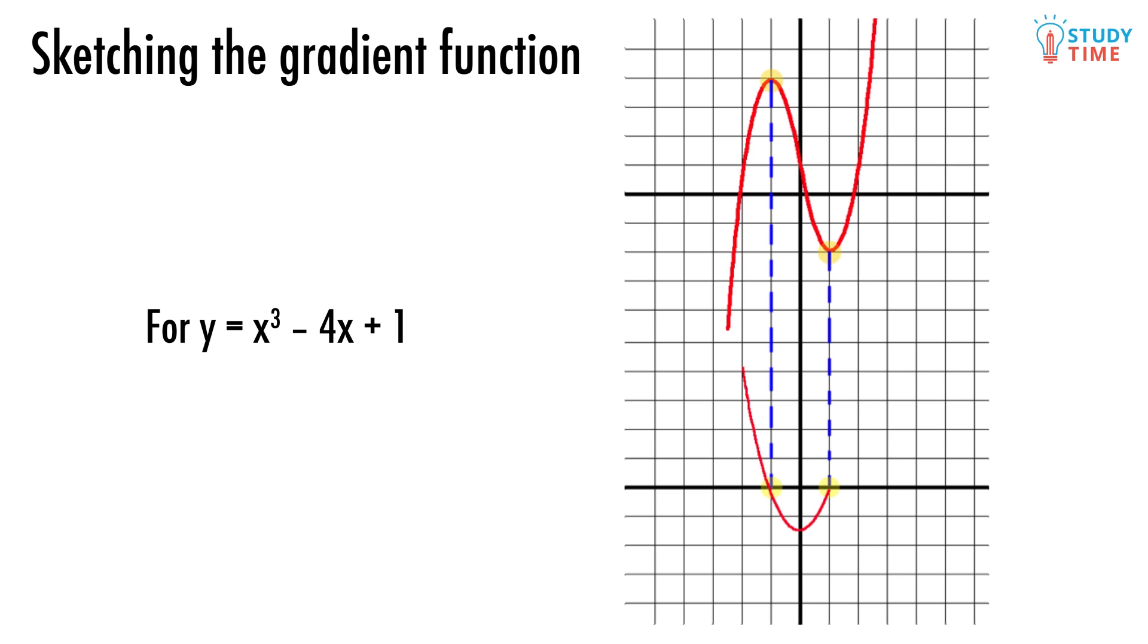The last bit we need to draw is the part to the right of the minimum. Since this is where the graph is going up, the gradient will switch back to being above the x axis. And just like that, we've taken the original equation and drawn the gradient.